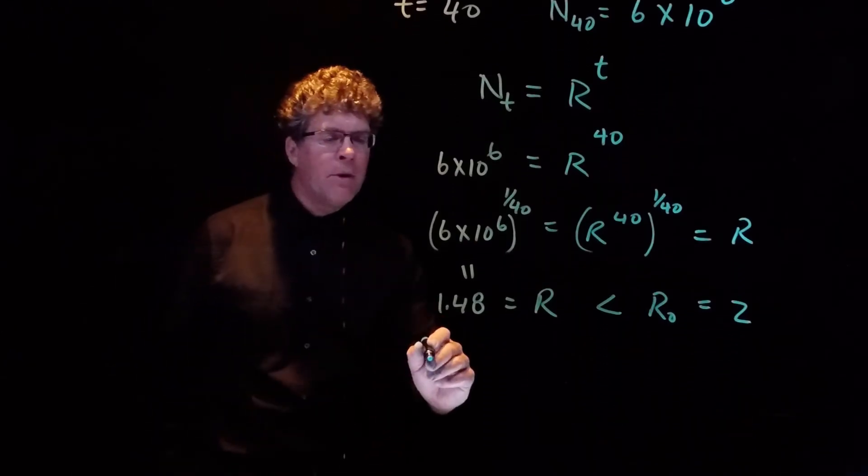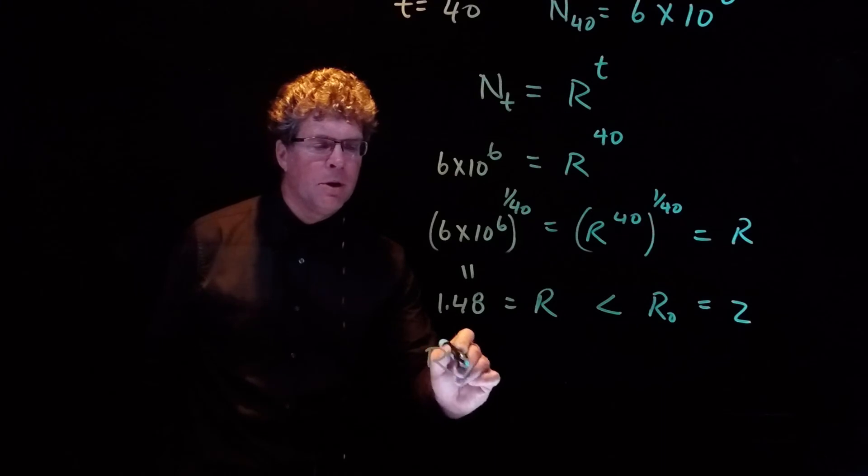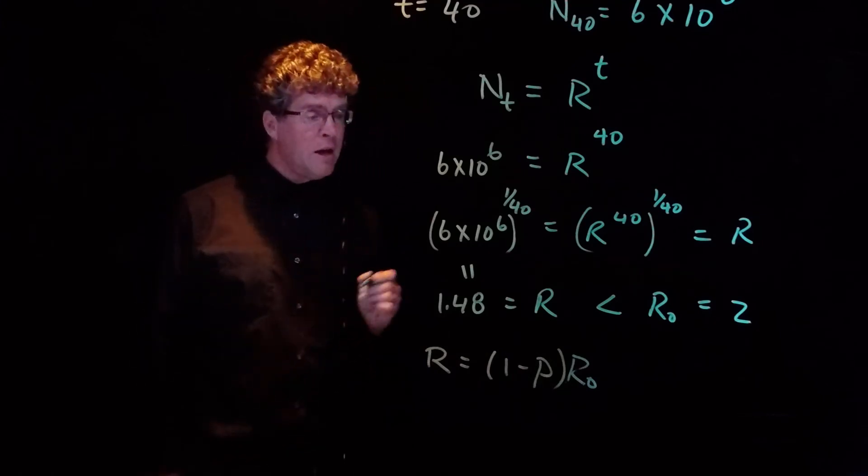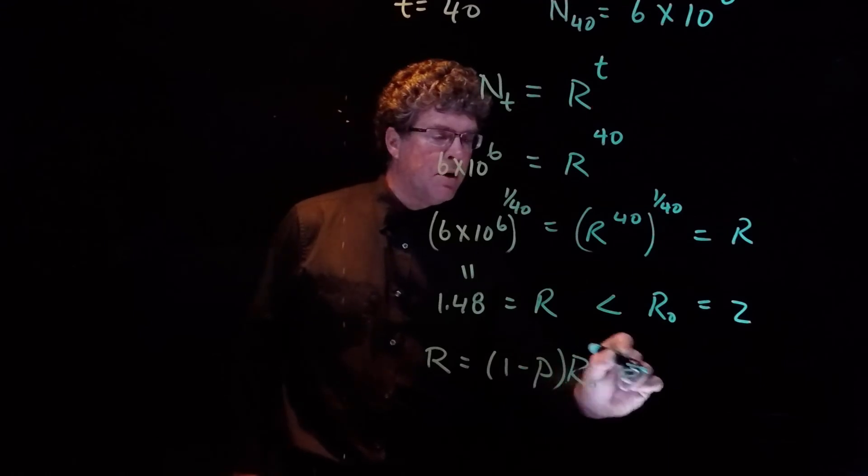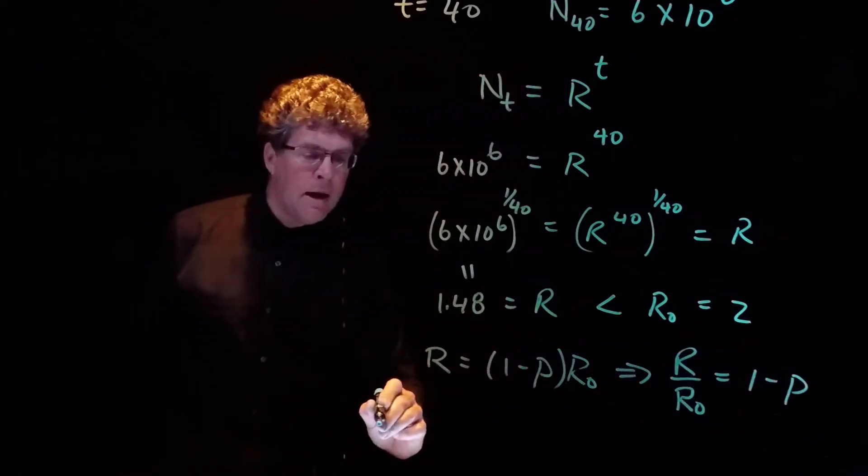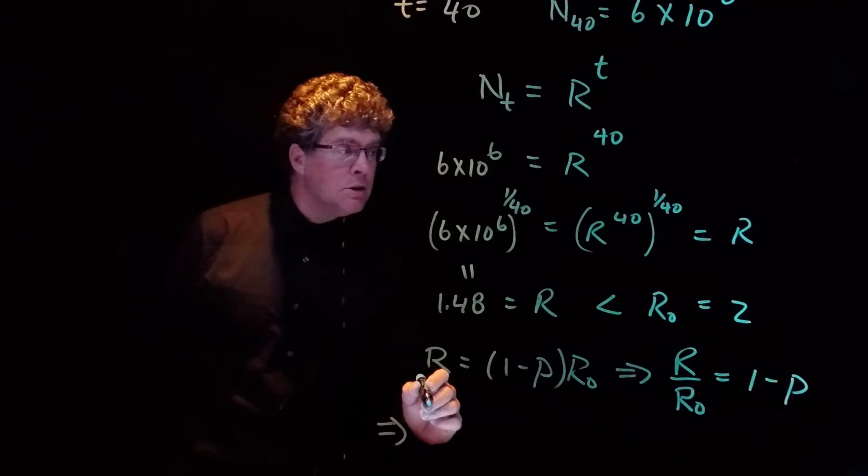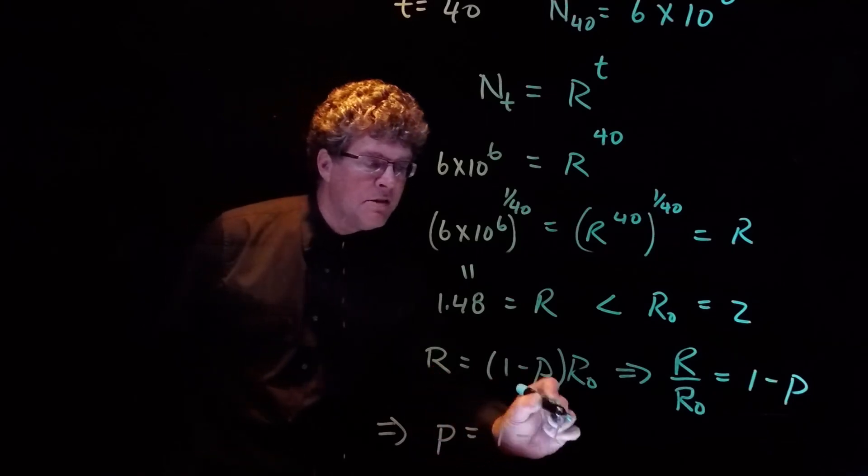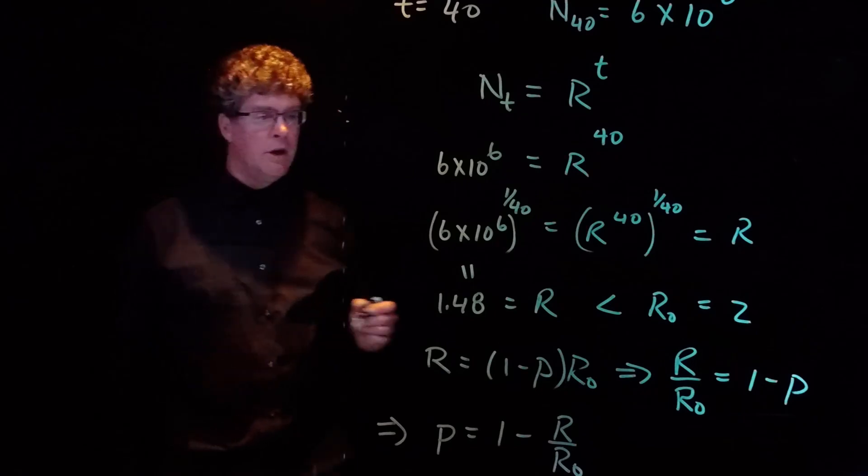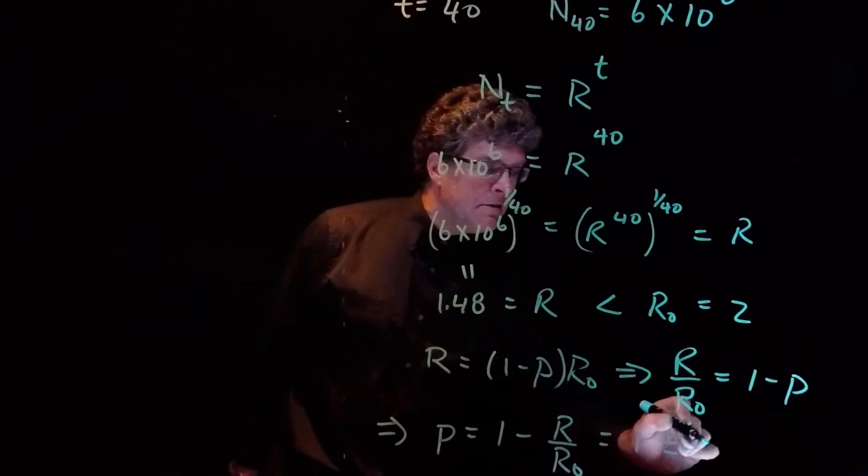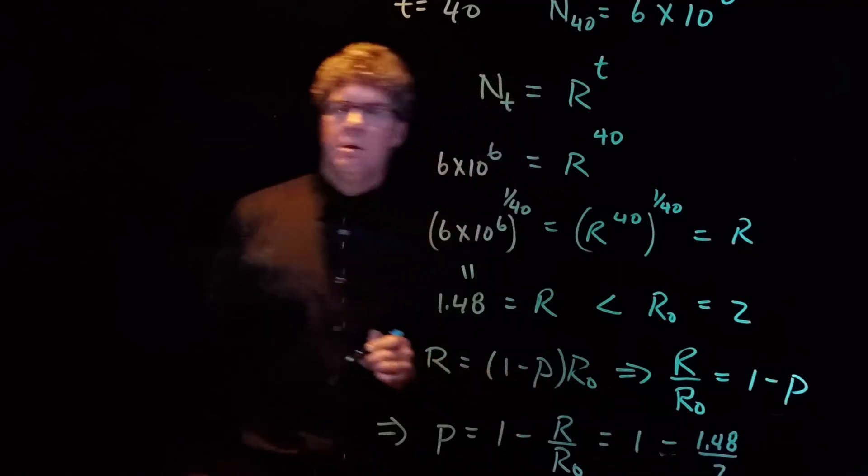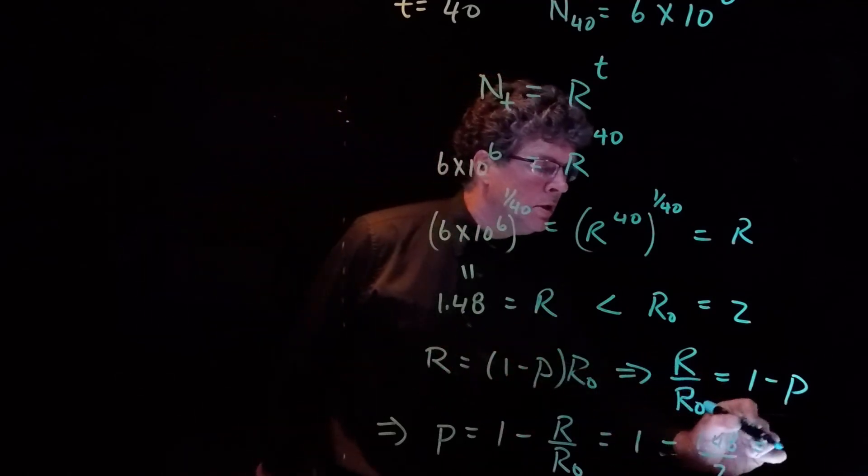And so to figure out how much social distancing has gone on, let's remember the formula: R is 1 minus p times R₀. If we want to know p, then we can divide both sides by R₀. R over R₀ is equal to 1 minus p. And then if we rearrange, we have p is equal to 1 minus R over R₀. Now with R₀ equals 2 and R equals 1.48, we have 1 minus 1.48 over 2, which is equal to 0.26.